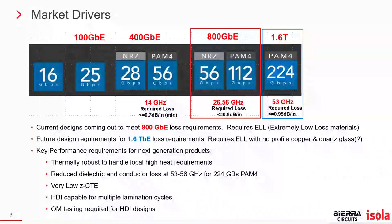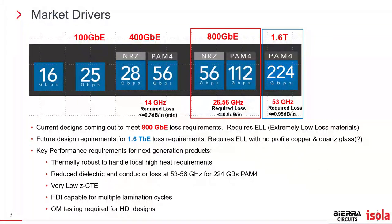These things are being investigated now. There's a lot of work at the PCB and design level looking at what we can do to get to that 224 gigabit per second target. Copper is one of those very important factors, and the next slide will explain that.